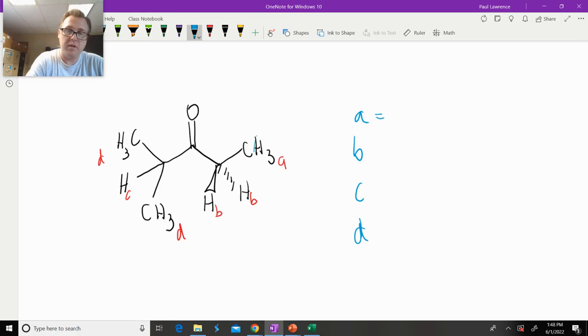So A, those protons, how are they going to get split? Well, we notice that it's attached to that carbon. So we have to go to the adjacent carbon, right there. How many hydrogens are on the adjacent? Two. So two plus one is three. So that's going to be a triplet for A.